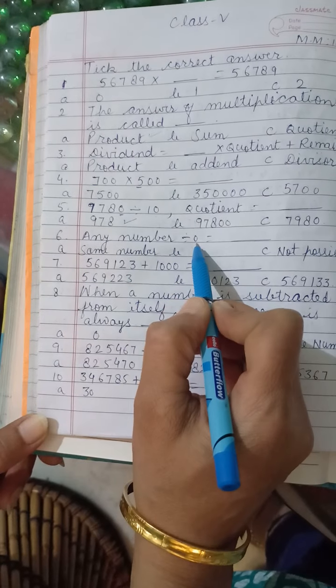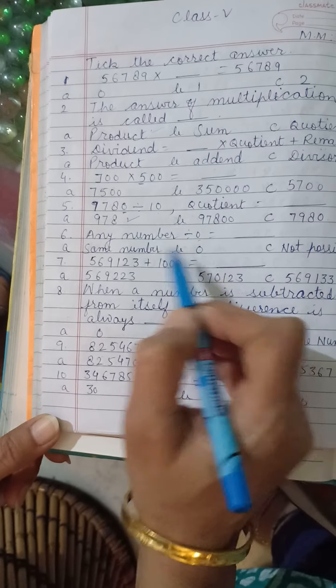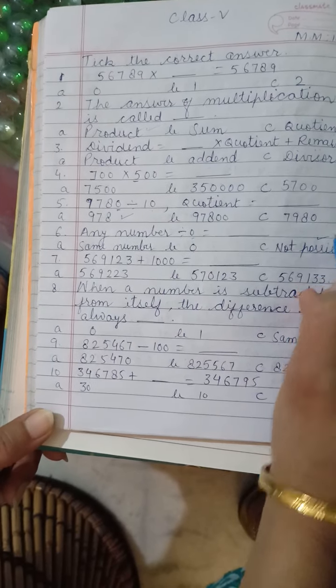Any number divided by 0. Division by 0 is not possible. Then this is same number. No, it is not there. This is 0. Then this is not possible.